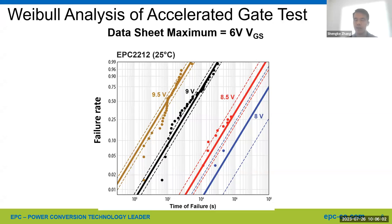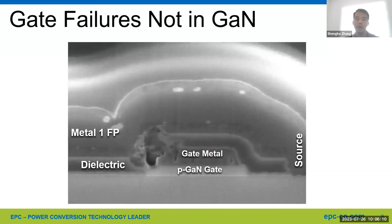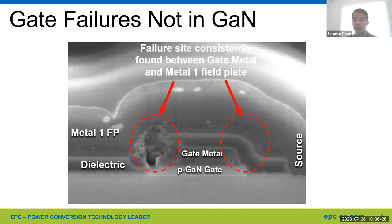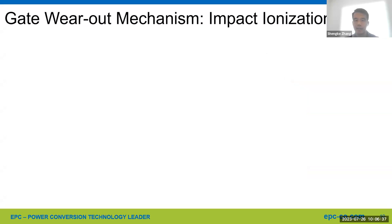After failures were identified, we conducted failure analysis. Here's the cross-section of the failure site, where you can see the failure occurred between the gate metal and the metal one field plate, as shown in the circled area. All the devices failed in a similar manner — sometimes on the left, sometimes on the right. Based on the FA results, a good understanding of the intrinsic wearout mechanism was found. Next, we would like to use a physics-based model to explain this failure mechanism.